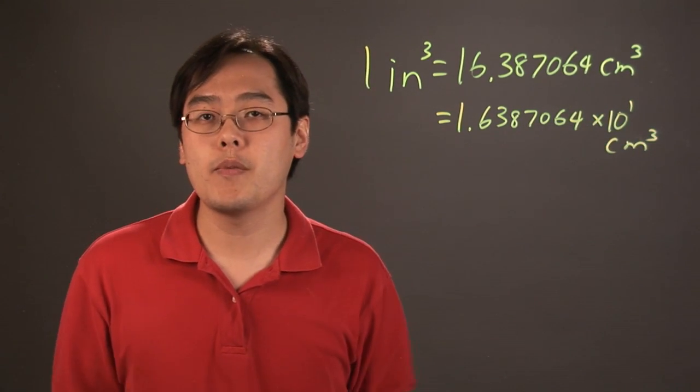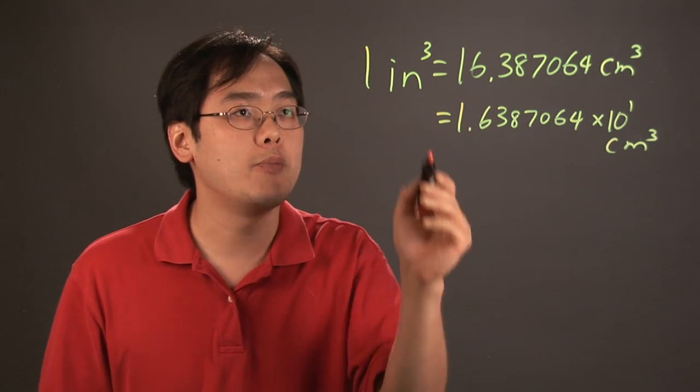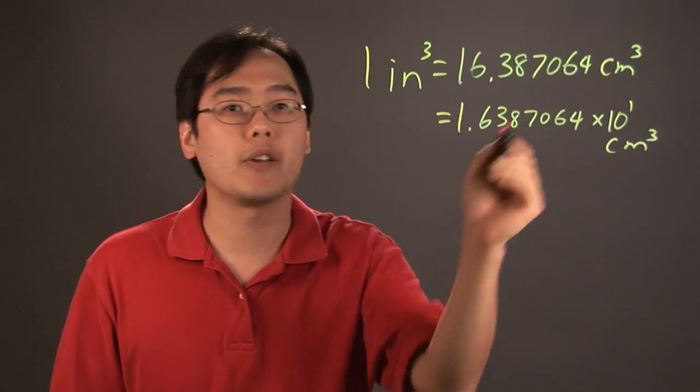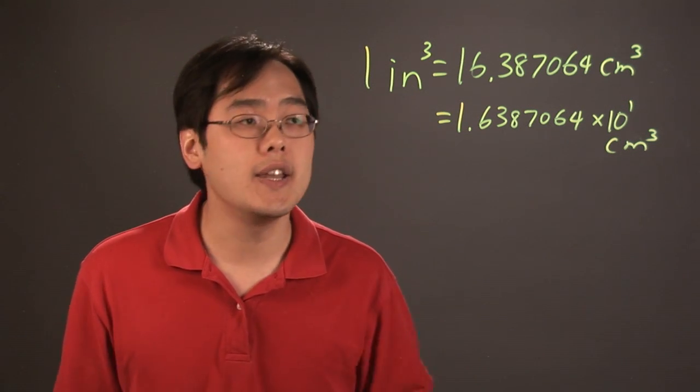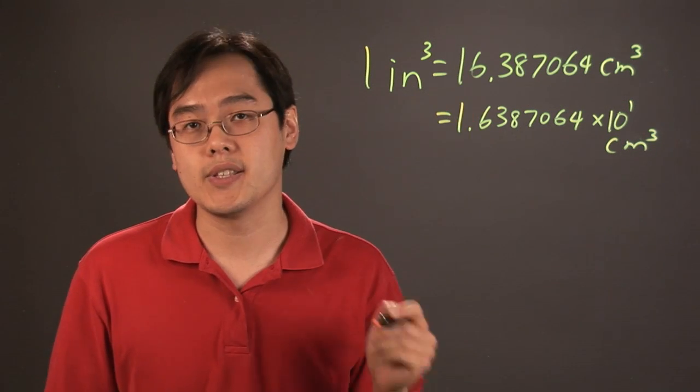So when you're converting from cubic inches to cubic centimeters you will have to multiply by this particular number and what I recommend is at the end when you know your conversions are done then you can write it in scientific notation.